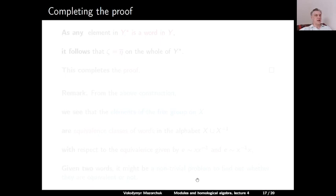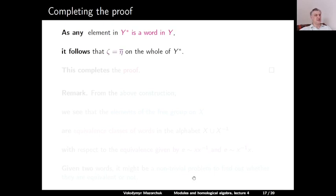Finally, we need uniqueness. If ζ is any group homomorphism from Y*/~ to G with ζ(x) = ψ(x), then ζ(x̃) equals the inverse of ψ(x), since x̃ is the inverse of x, ζ is a group homomorphism, and group homomorphisms send inverses to inverses. Since any element in Y*/~ is a word in Y, from the homomorphism axiom we see that ζ and η̄ coincide on all letters in Y, and therefore coincide on the whole free monoid Y*. This completes the proof.